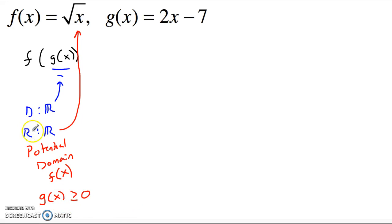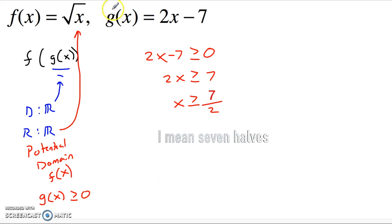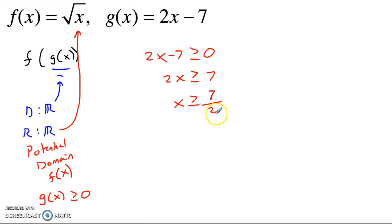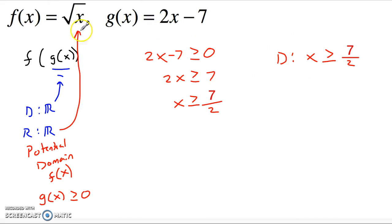If g of x gives me something negative — which it's perfectly happy to do since its range is all real numbers — that's going to cause a problem for f of x, the square root function. So I need to ensure g of x stays greater than or equal to zero. That means 2x minus 7 must be greater than or equal to zero, so 2x must be greater than or equal to 7, and x must be greater than or equal to 3 halves. So the domain of the composition is x greater than or equal to 3 halves.